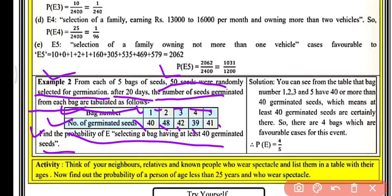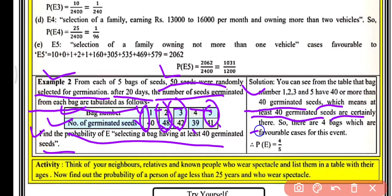From the table, bag numbers one, two, three, and five have 40 or more germinated seeds, meaning at least 40 germinated seeds. So there are four bags which are favorable cases for this event. Therefore, the probability of the event is 4 by 5, that is 0.8.